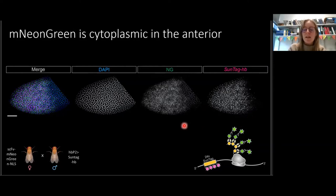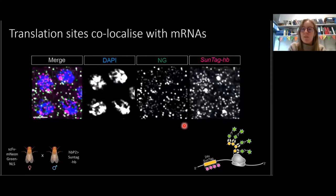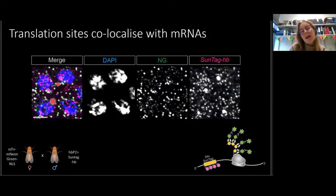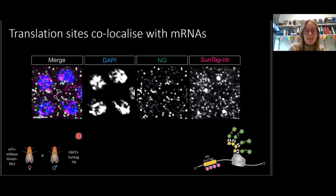We thought these were probably translation sites, but we wanted to confirm they were co-localised with an mRNA. When we zoom in, we can see that they definitely are. We can see the bright transcription site within the nucleus, and then individual mRNAs as magenta signals — some not co-localised with neon green, meaning untranslated, and some co-localised, meaning translating. We also see a few neon green signals not co-localised with an mRNA that are generally dimmer, which we think are protein that has been translated and released from the ribosome.